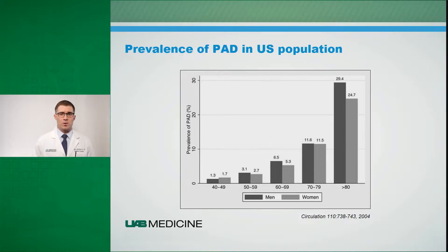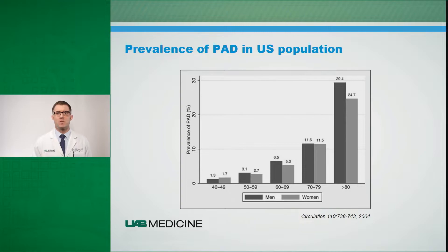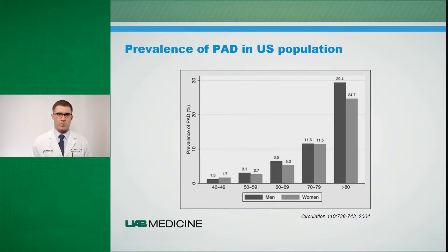PAD is a relatively prevalent disease within the U.S. population. The older you are, the more likely you are to have this disease, and in patients over the age of 80, up to 30 percent of people within the U.S. population have a diagnosis of PAD.